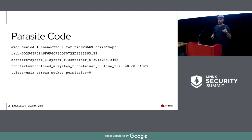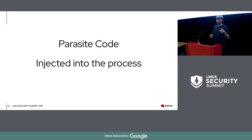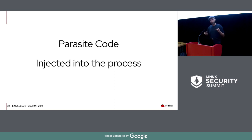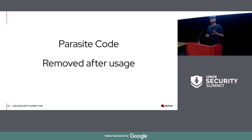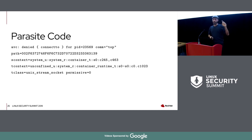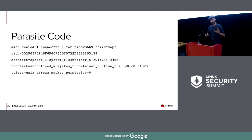The denial showed the source context as a process running in `container_t`, trying to connect to something in `container_runtime_t` — and the process was `top`, which was running inside the container. This looked really strange. The reason is CRIU's parasite code: to dump memory from within a process's namespace, CRIU injects code via ptrace. This injected daemon waits for commands and connects back to the main CRIU process running outside the container. SELinux correctly blocked this.